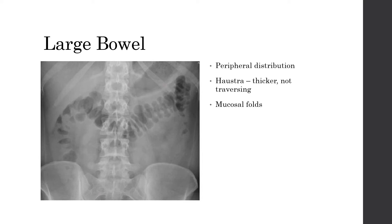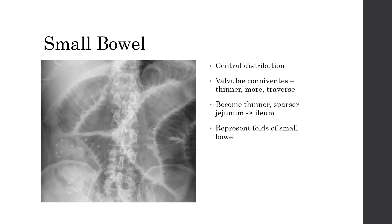Now we're going to look at some normal patterns of gas. Here is an image that shows the large bowel quite well — we can identify it by looking for haustra, which are the mucosal folds of the large bowel. They are thick and do not traverse the lumen. Large bowel is normally peripherally distributed, however in pathology such as obstruction where the diameter increases, it can take up the whole film. Comparing to the small bowel, the folds are thinner and traverse the diameter of the lumen — these are called valvulae conniventes. They generally become thinner and less frequent as we move from jejunum to ileum, and the small bowel tends to have a central distribution.